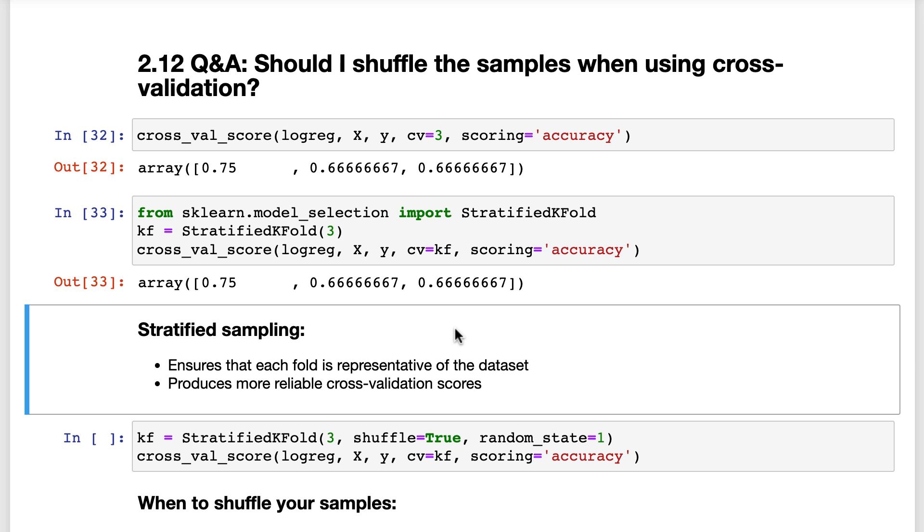It's called StratifiedKFold because it uses stratified sampling to ensure that the class proportions are approximately equal in each fold. For example, if 40% of the passengers in the dataset survived, then stratified sampling ensures that about 40% of each fold is survived passengers.